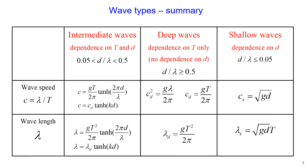On this slide I show a summary of how waves are defined and what types of waves we have, and how to calculate wave speed and wavelength for each wave type. We have three types of waves: intermediate waves, deep waves, and shallow waves. These are defined based on the ratio of water depth divided by wavelength. When this ratio is between 0.05 and 0.5, we have intermediate waves. When this ratio is greater than or equal to 0.5, we have deep waves. When this ratio is less than or equal to 0.05, we have shallow waves.